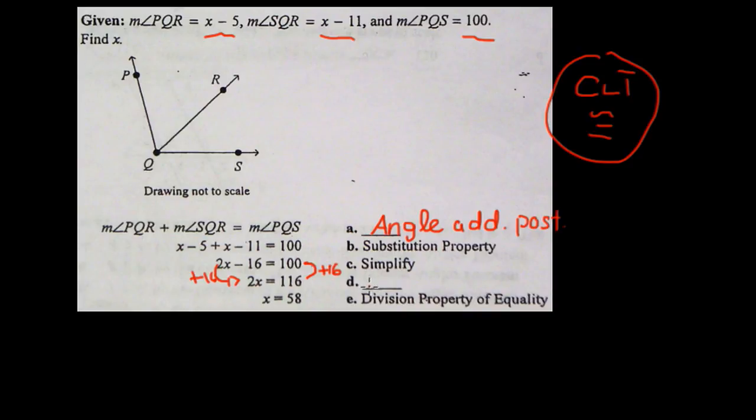Remember the addition property is different than the angle addition property. Angle addition property is the concept that says two smaller angles can be combined together to make a bigger angle. Whereas this is any constant added to both sides, or any term added to both sides, will result in an equal or equivalent statement. So there's another problem. Let me know if you have any questions.